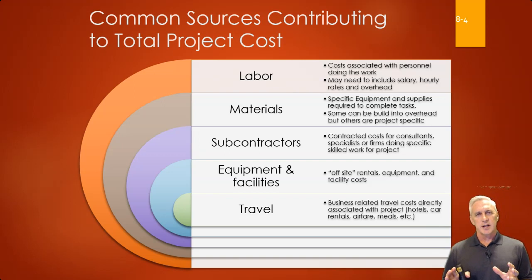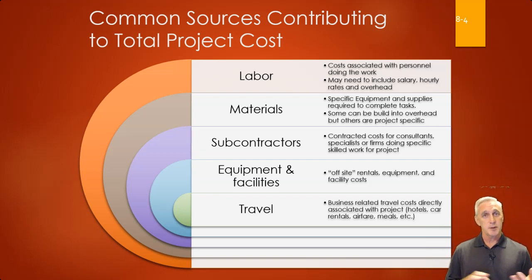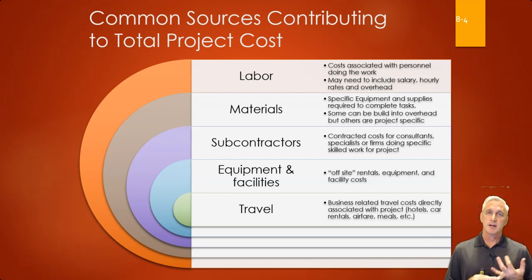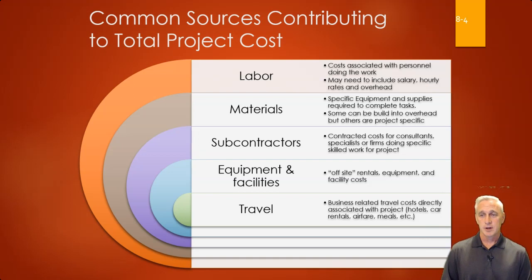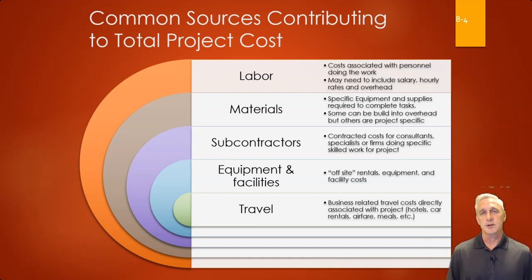Where does cost come from? The largest component of cost in any project typically lies in labor — it's the people doing the work, and that's where the majority of costs are found. Then it comes down to materials, and then subcontractors if you have to hire some for different work. Those can be interchangeable with equipment and facilities depending on the project — if there's equipment to rent or a facility to maintain. And of course, any associated business travel costs can also occur.